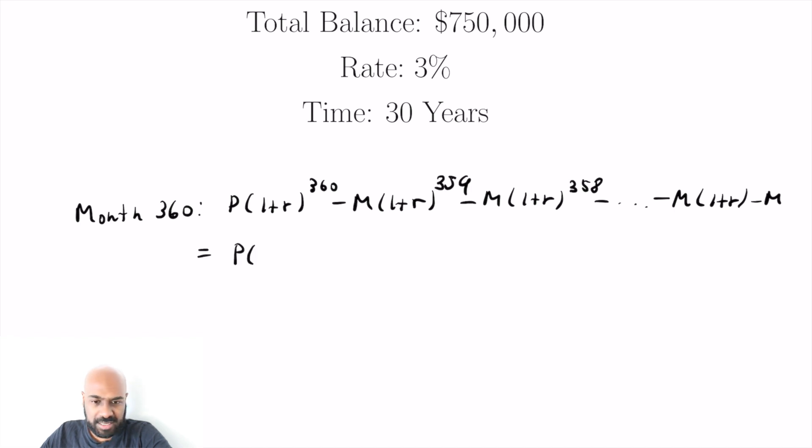all the way down to minus M times the quantity one plus R and then minus M. Okay. So it would be nice to like simplify this expression. I'm seeing like sums of powers of one plus R here and we'll be able to find a nice expression for that in terms of one plus R compactly. So this is a geometric series with common ratio one plus R, but so it turns out that this will be one plus R to the 360 minus one all over one plus R minus one.